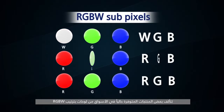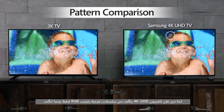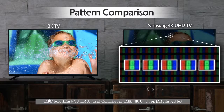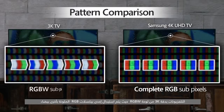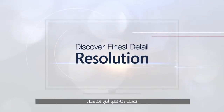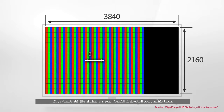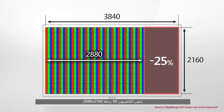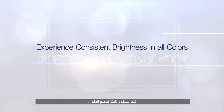Some products currently available are designed with RGBW panels in which one of the RGB subpixels is replaced with white. We can see that the 4K UHD TV is only comprised of RGB subpixels, while a 3K TV with an RGBW panel has one of the RGB subpixels replaced with white. The fact that the number of R, G, and B subpixels decreased by 25% means that this is a 3K television with a resolution of 2,880 by 2,160, well below the standard for 4K.